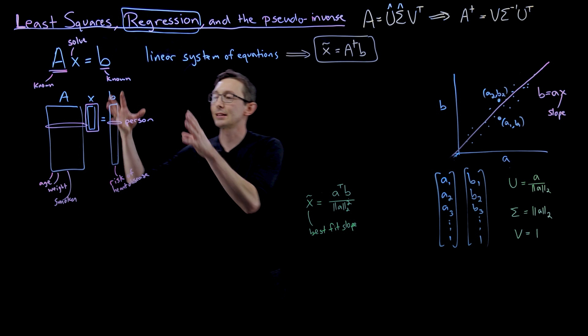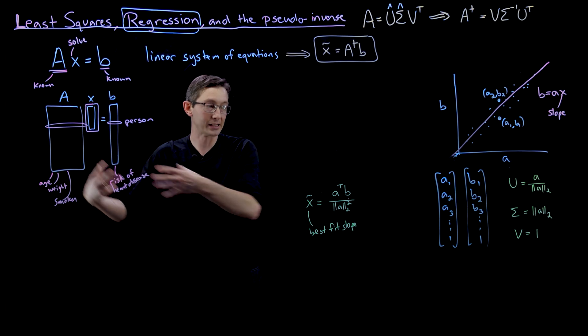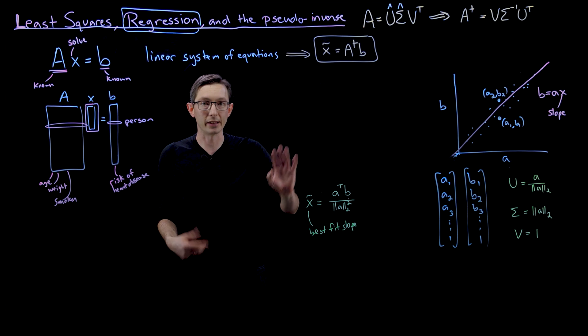It's exactly what you would get if you plug these values into this pseudo inverse in this formula here. But this formula generalizes to much higher dimensional data, where there are multiple risk factors, and you want to build models. So I think that's pretty cool.